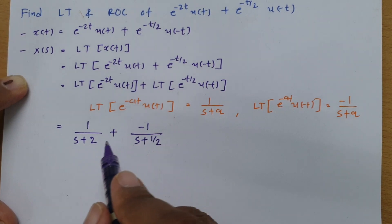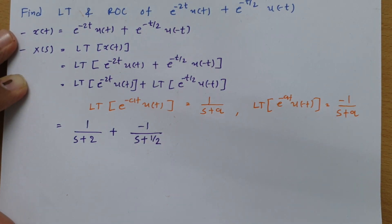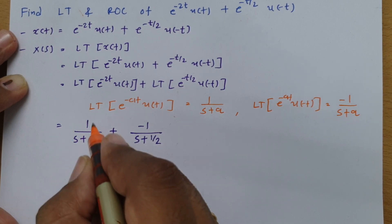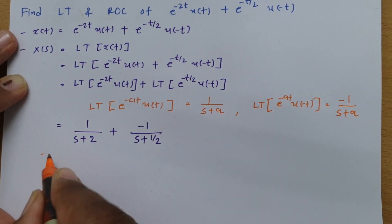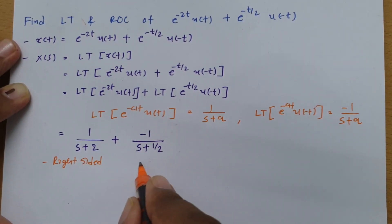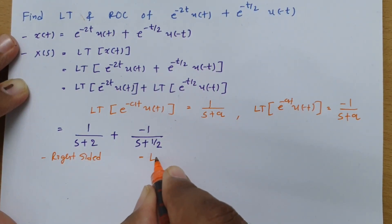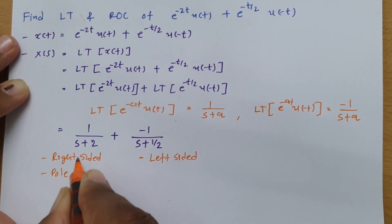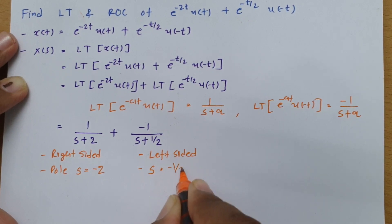To find the ROC, we identify the signal types. The first signal e^(-2t)u(t) is a right-sided signal with pole at s = -2. The second signal e^(-t/2)u(-t) contains u(-t), so it is a left-sided signal with pole at s = -1/2.